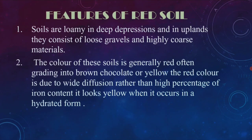The color of this soil is generally red. The red soil is often gathering into a brown chocolate or yellow color. The red color is due to iron deficiency rather than a high percentage of iron. It looks yellow when it occurs in a hydrated form.